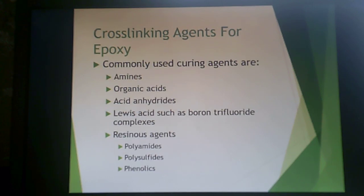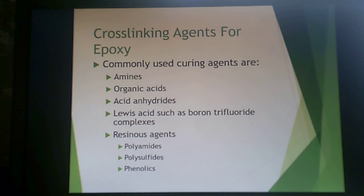Cross-linking agents come in a wide variety: amines, organic acids, acid anhydrides, Lewis acids like boron trifluoride complexes, and other resin agents such as polyamides, polysulfides, and phenolics.